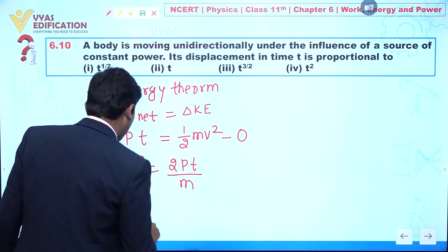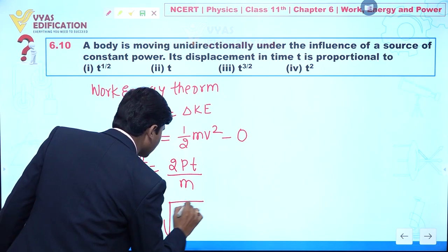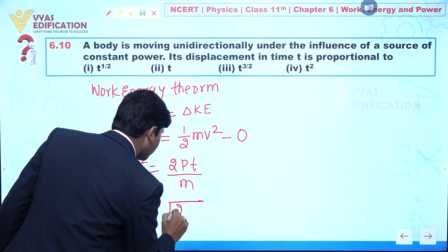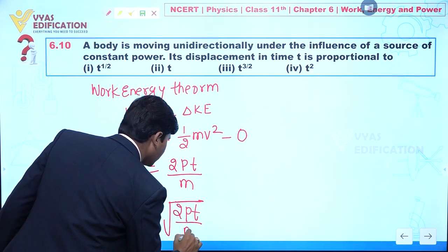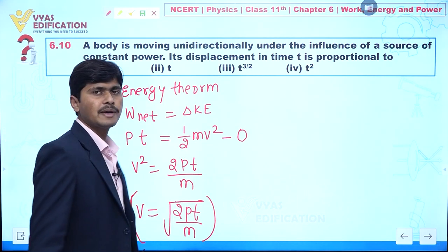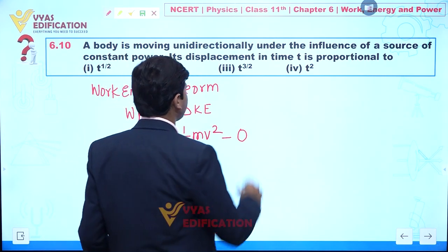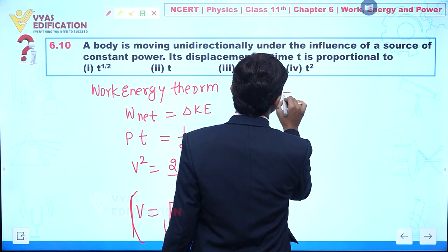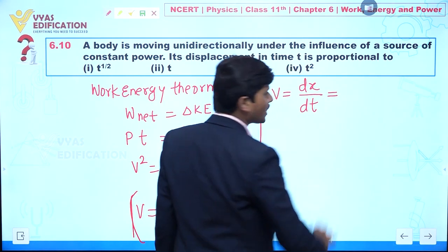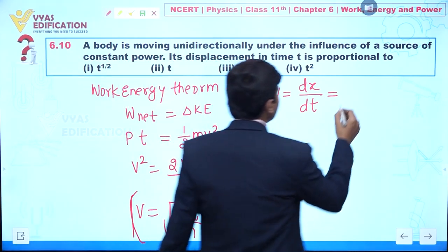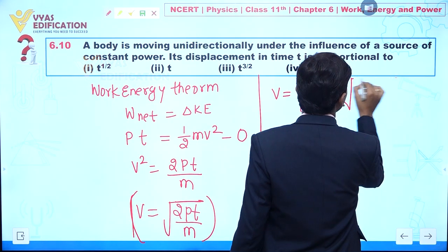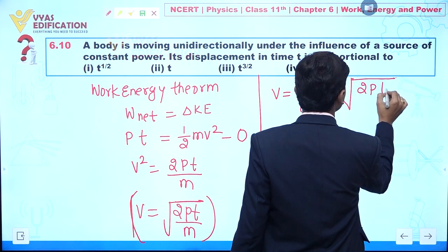So the value of v is given by the square root of 2Pt divided by m. Now we can write v equal to dx/dt, and we can say this equals the square root of 2Pt divided by m.